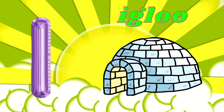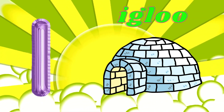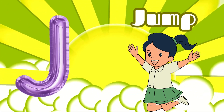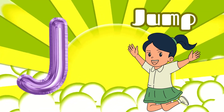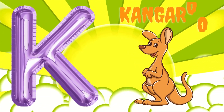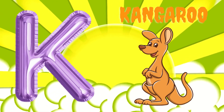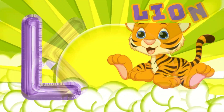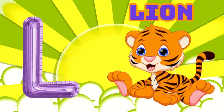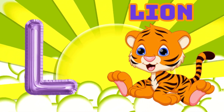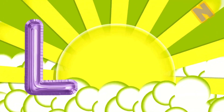I is for Igloo, I-I-Igloo. J is for Jump, J-J-Jump. K is for Kangaroo, K-K-Kangaroo. L is for Lion, L-L-Lion.